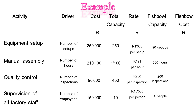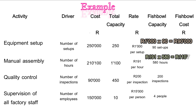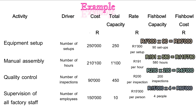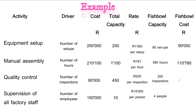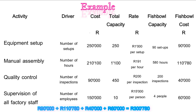Finally, we multiply Fishbowl capacity by the rate. 1,000 Rand per setup times 90 setups gives 90,000 Rand. 190 Rand per hour times 580 hours gives 110,780 Rand. 200 Rand per inspection times 200 inspections gives 40,000 Rand. 15,000 Rand per person times 4 people gives 60,000 Rand. Adding them all together: 90,000 plus 110,780 plus 40,000 plus 60,000 gives a total of 300,780 Rand — the total fixed manufacturing overhead cost allocated to Fishbowl for 2,500 units.